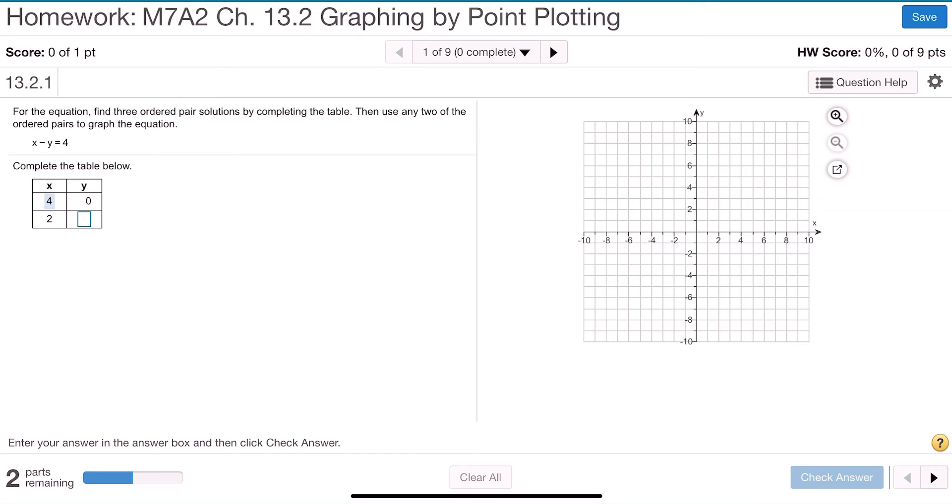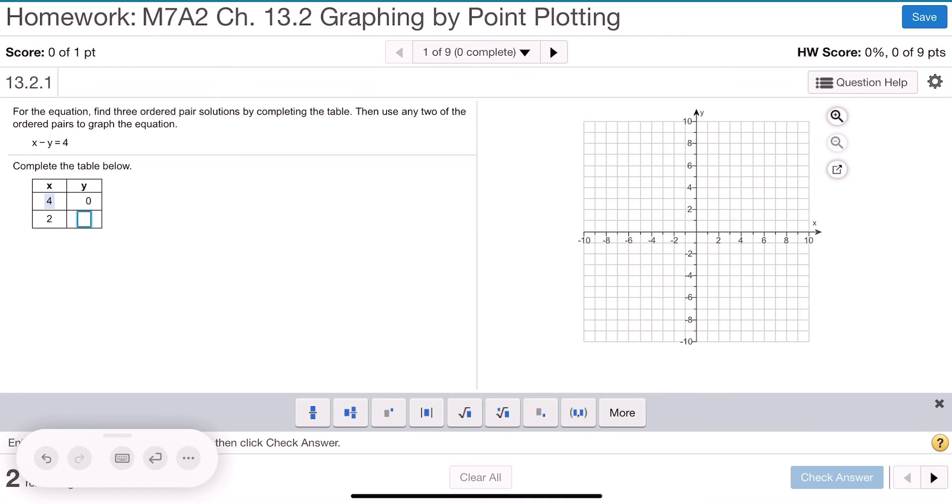The next question says, what happens when x is 2? So your new equation is 2 minus y is 4, subtract 2 from both sides, and you have a negative y is equal to 2. And remember, we don't want to look for negative y, we want to find out what y is equal to. So what happens is we take that negative sign, we divide by negative 1, and we find out that the answer is negative 2.